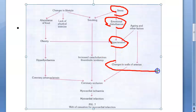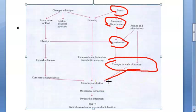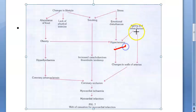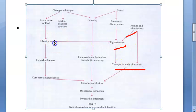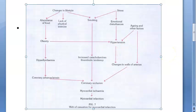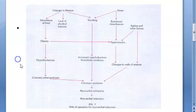Stress leads to emotional disturbance, which leads to hypertension. Hypertension leads to changes in the wall of the arteries, which leads to coronary occlusion. Also, hypertension can come because of age, and obesity can also lead to hypertension — you can see how everything is linked in this web of causation.